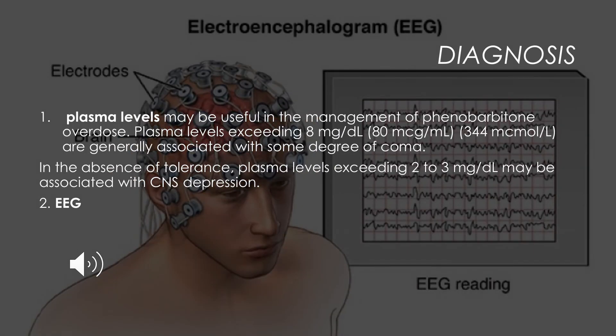Diagnosis of barbiturate poisoning can be done in two ways: measuring plasma levels and performing an EEG (electroencephalogram). If phenobarbitone plasma levels exceed 8 mg per dl or 80 micrograms per ml, it indicates a degree of coma. In the absence of tolerance, plasma levels exceeding 2 to 3 mg per deciliter may lead to CNS depression.